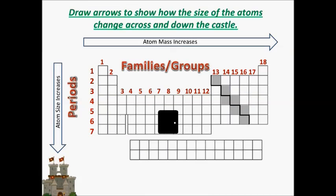A couple more trends on the periodic table: atomic mass increases as you move from the left side of the table to the right side. Go ahead and draw that arrow at the top and label it 'atom mass increases.' Atom size — its volume — increases as you move down the periodic table, so the element in period 1 family 1 has the smallest mass and smallest size, while elements toward the bottom have larger mass and larger size.